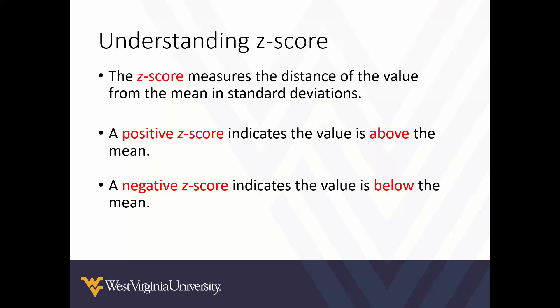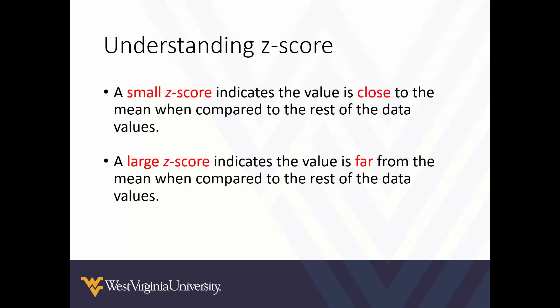The z-score measures the distance of a value from the mean in standard deviations — we can think of standard deviations almost like a unit of measure, the same way we think of inches. A positive z-score indicates the value is above the mean; a negative z-score indicates the value is below the mean. This positive and negative doesn't have good or bad connotations — it's locational. A small z-score indicates the value is close to the mean; a large z-score indicates the value is far from the mean.